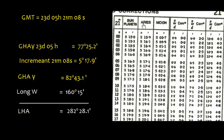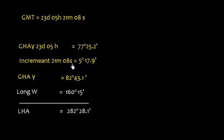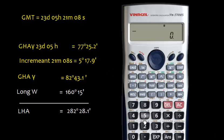We can calculate with the calculator: 77 degrees 25.2 minutes plus 5 degrees 17.9 minutes equals 82 degrees 43 minutes and 6 seconds, which is 43.1 minutes. Now for the longitude west, which is 160 degrees 15 minutes—longitude west means GHA is best and LHA is least.